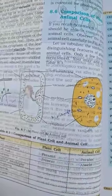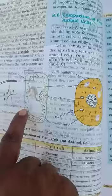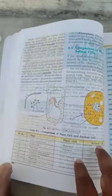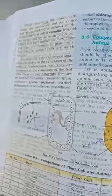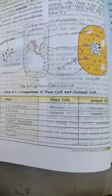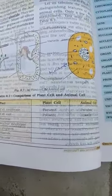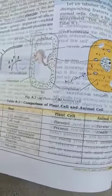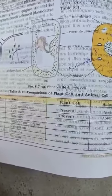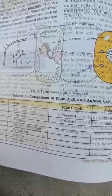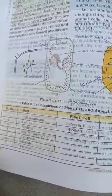Now let's look at the comparison of plant cells and animal cells. Refer to figure 8.7 — 'a' shows a plant cell and 'b' shows an animal cell. The parts we will compare include: cell membrane, cell wall, nucleus, nuclear membrane, cytoplasm, plastids, and vacuoles.